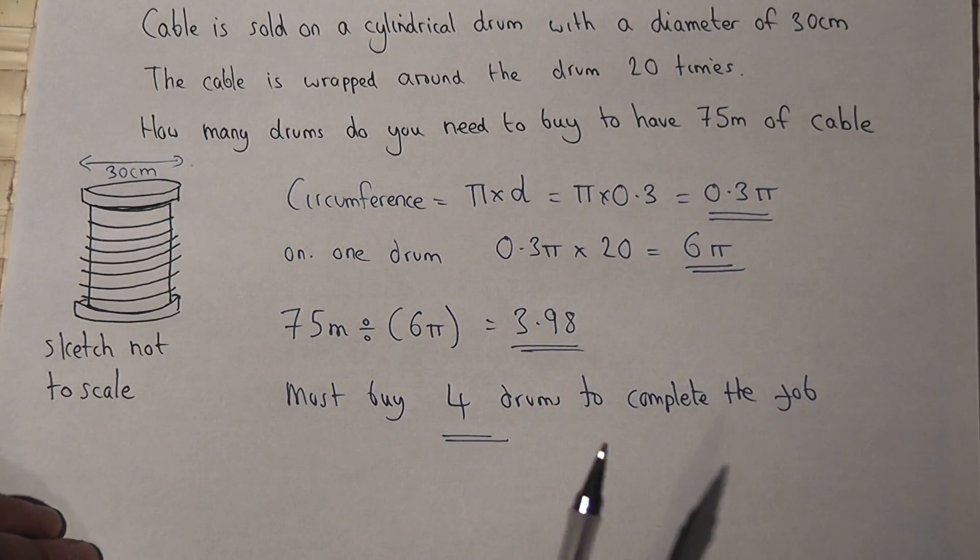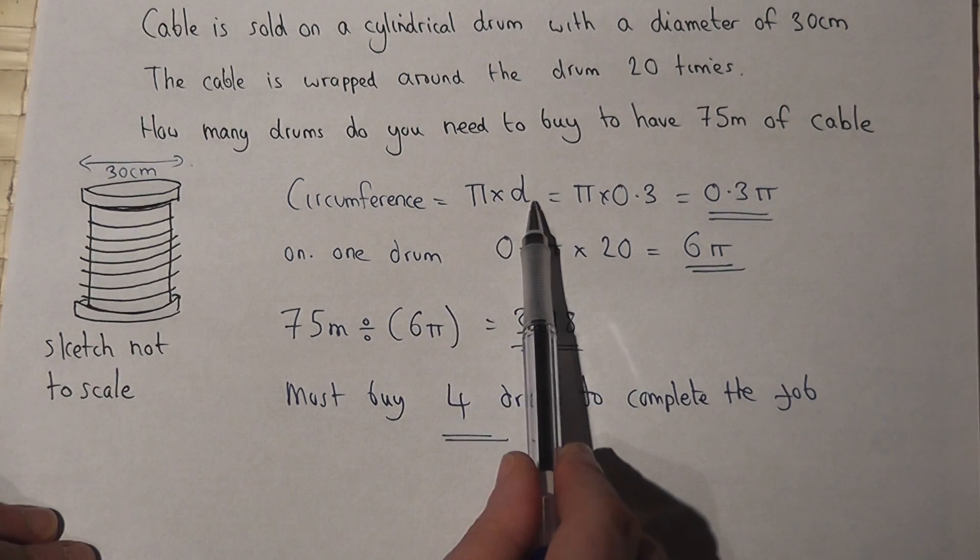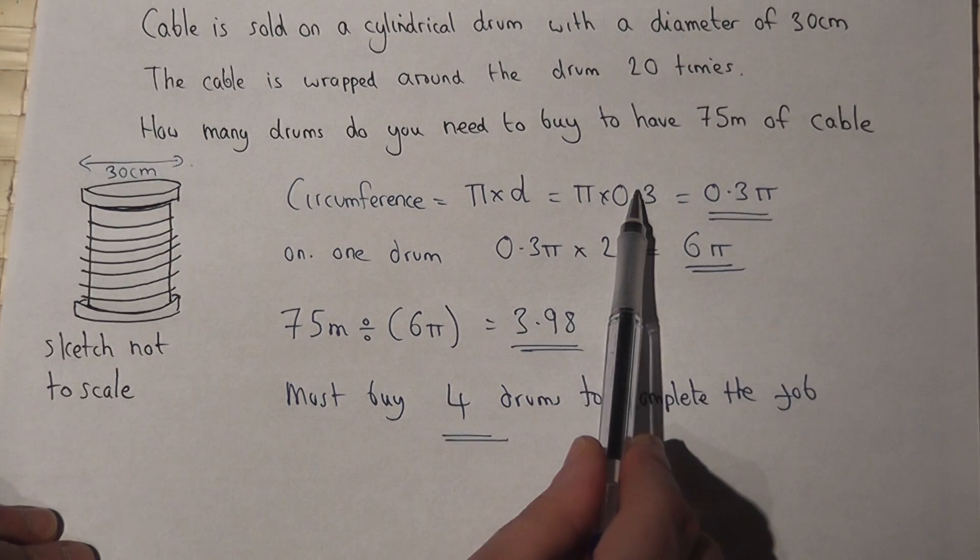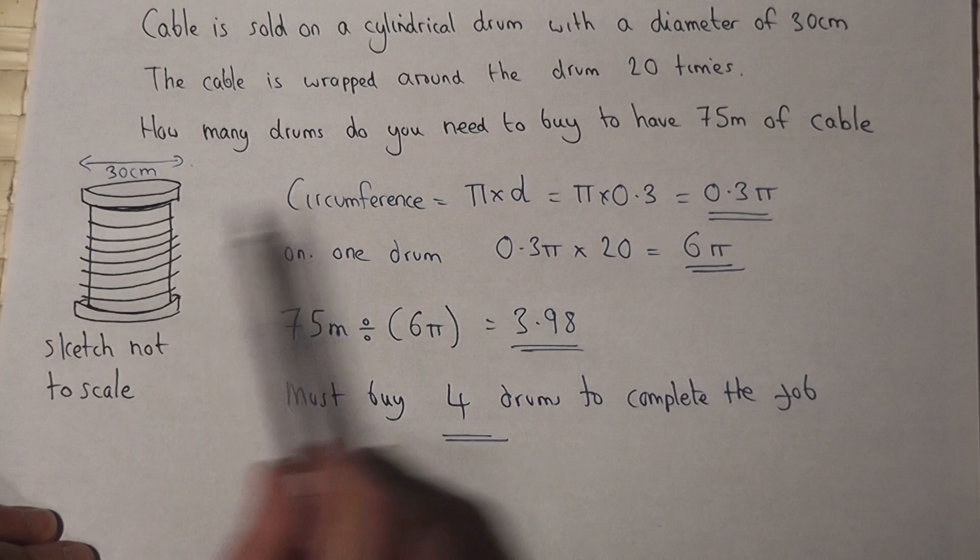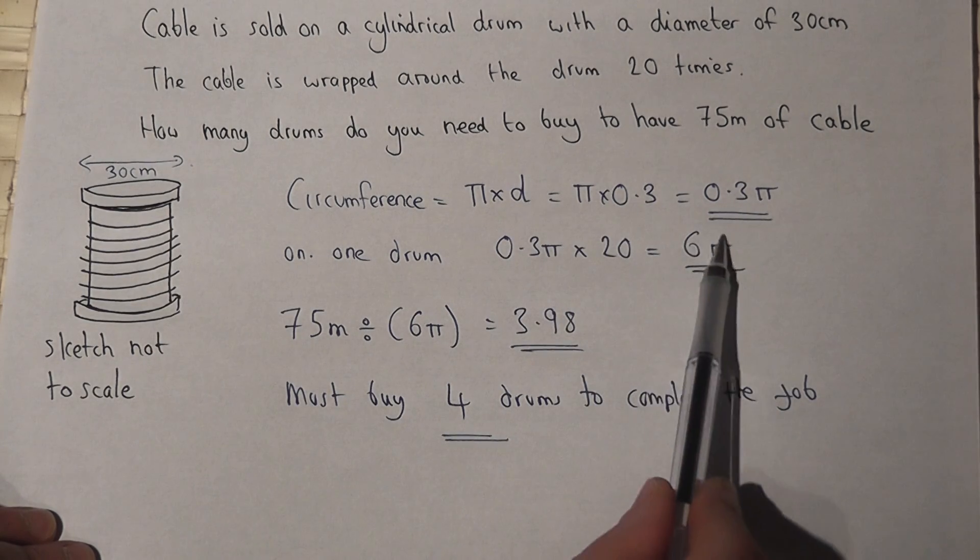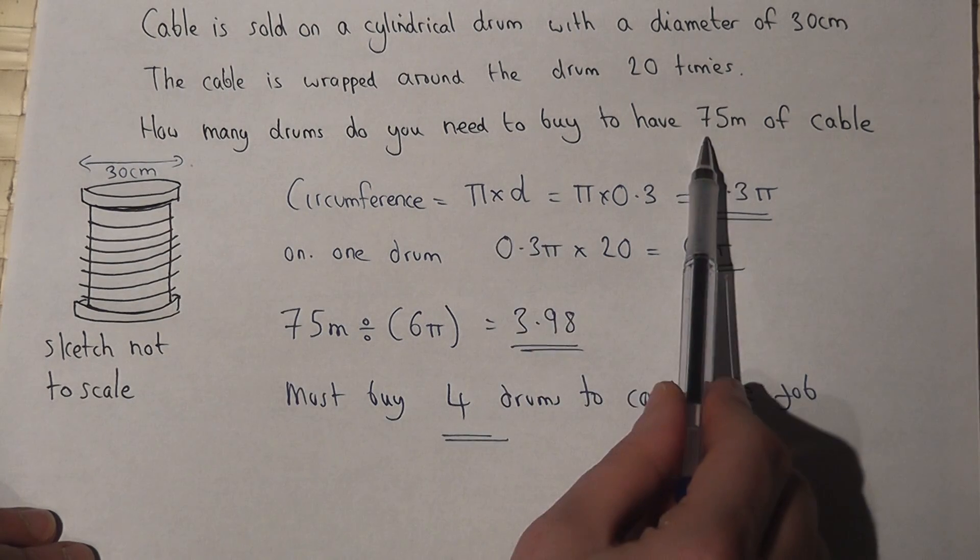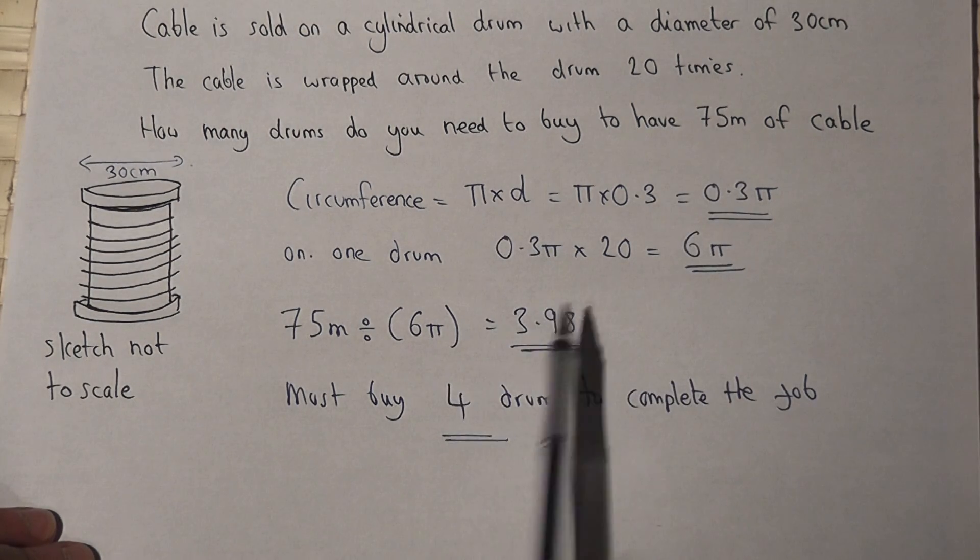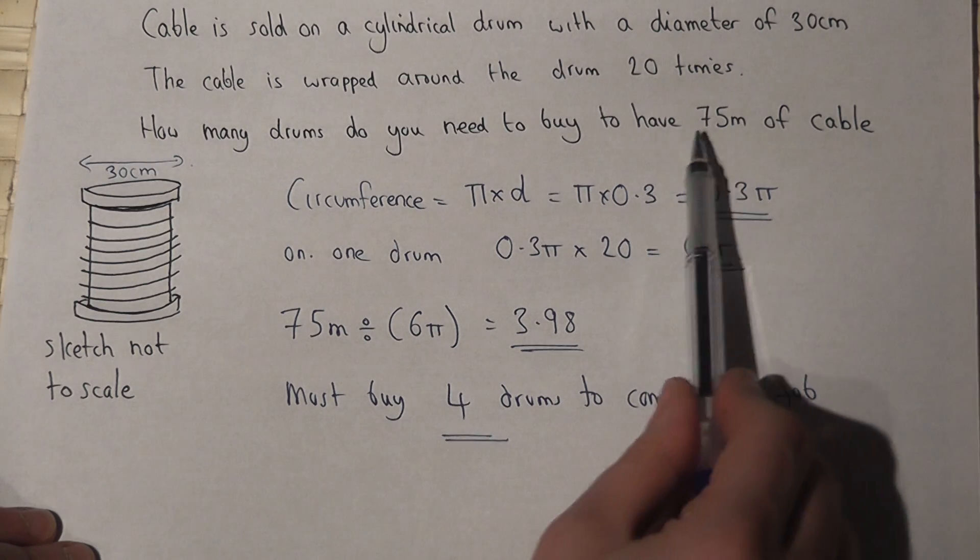So again, I found the circumference by doing pi times d, which I converted to meters because the rest of the question involved meters. It was wrapped around 20 times, so I had to times by 20, and this was the total amount of cabling on one drum. I then did 75 divided by 6 pi to get 3.98, so this meant I required four drums to complete the job.